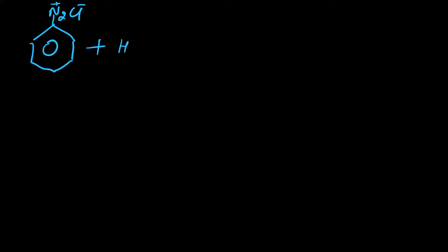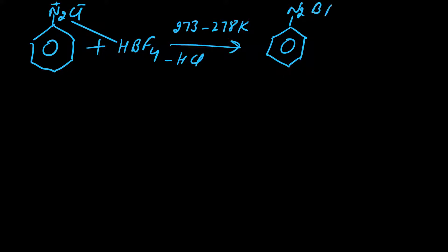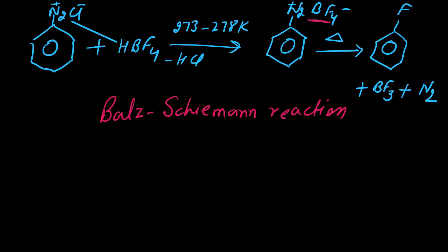अगर fluorobenzene की preparation करनी है तो benzene diazonium chloride का reaction HBF4 (hydrogen fluoroborate) के साथ करते हैं ice cold condition में। एक unstable product बनता है जिसमें HCl निकल जाता है और BF4- ऊपर Cl की जगह लग जाता है। इस unstable compound को heat करते हैं तो यह टूट जाता है और product मिलता है — fluorobenzene + BF3 (boron trifluoride) + N2। इस reaction का नाम है Balz-Schiemann reaction।